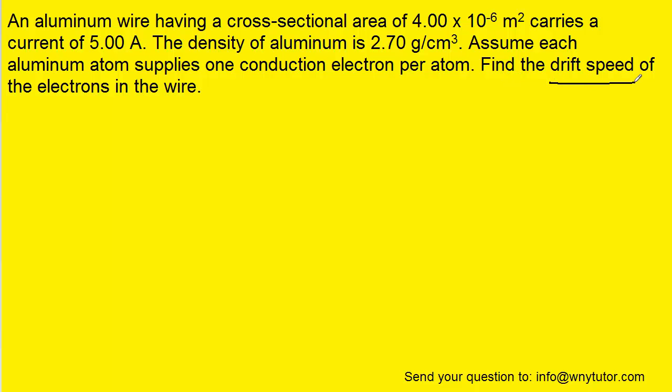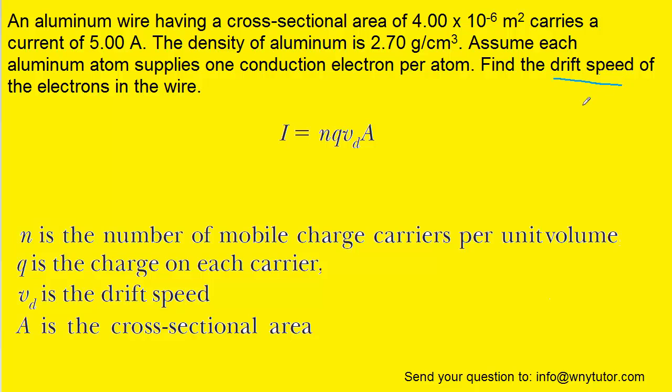Now, of course, since the question is asking for the drift speed of the electrons in the wire, we can take a look at the formula that relates drift speed to a few other variables. So drift speed turns out to be represented by the symbol V sub D. And if we look at the equation, it's kind of buried inside. It's right there.